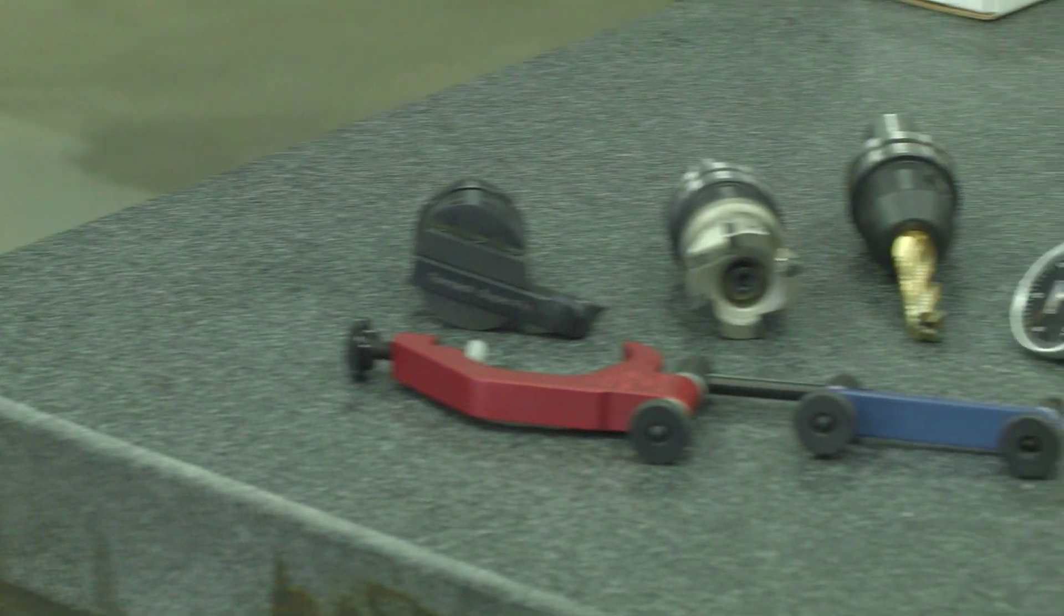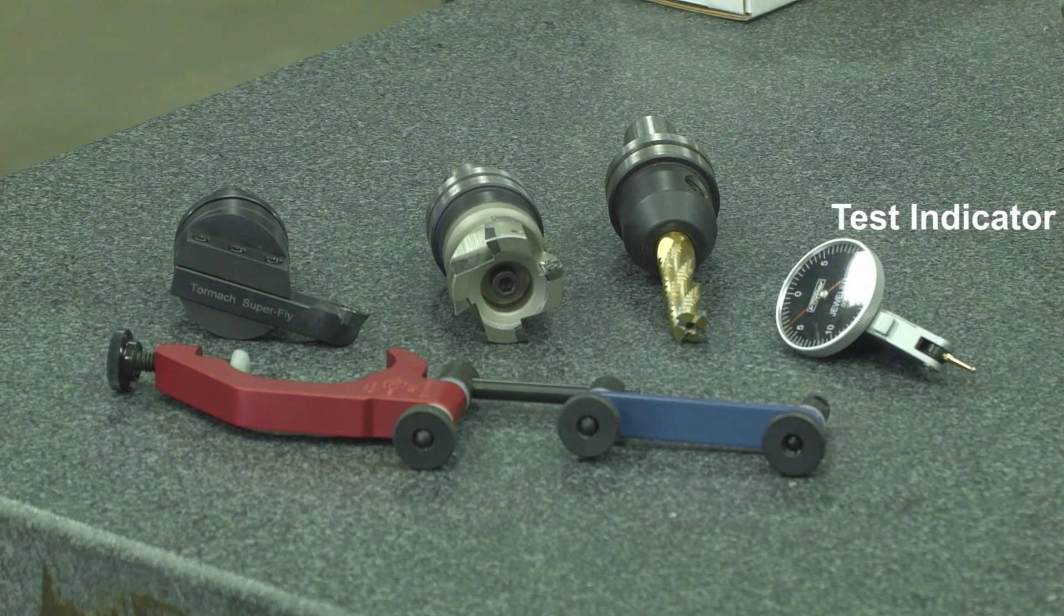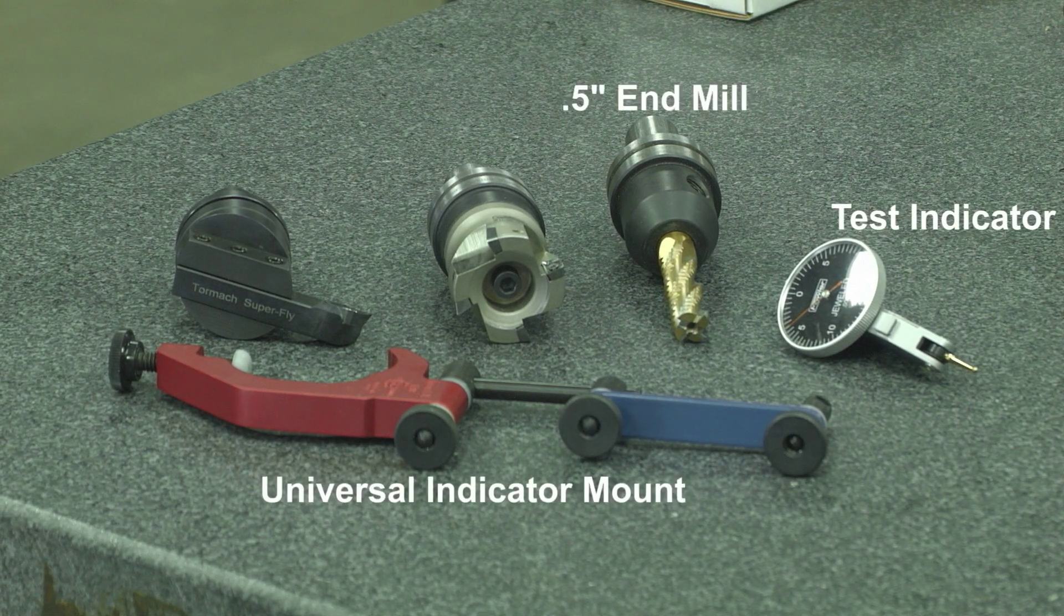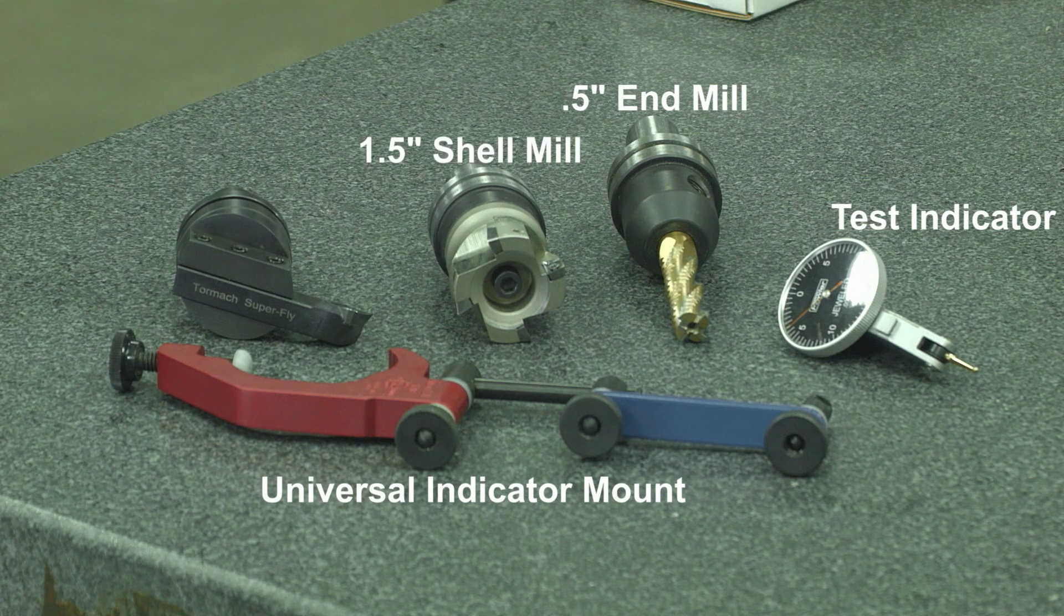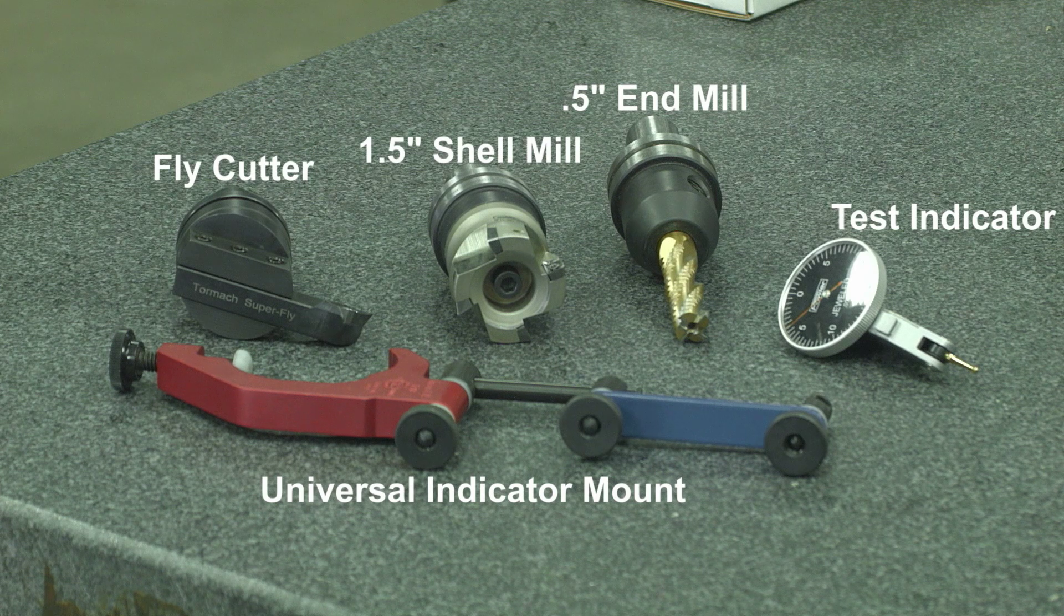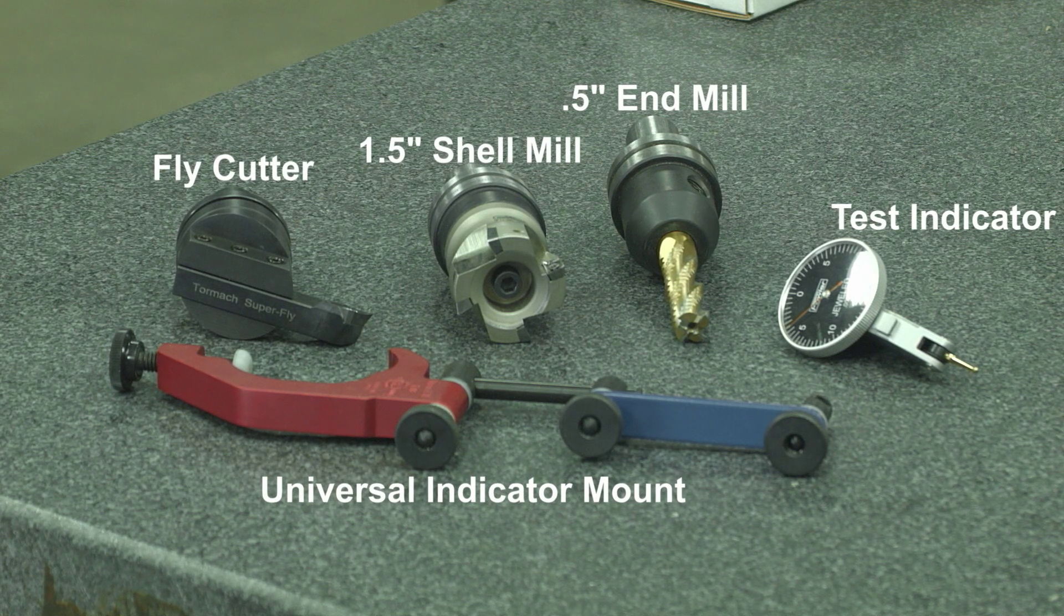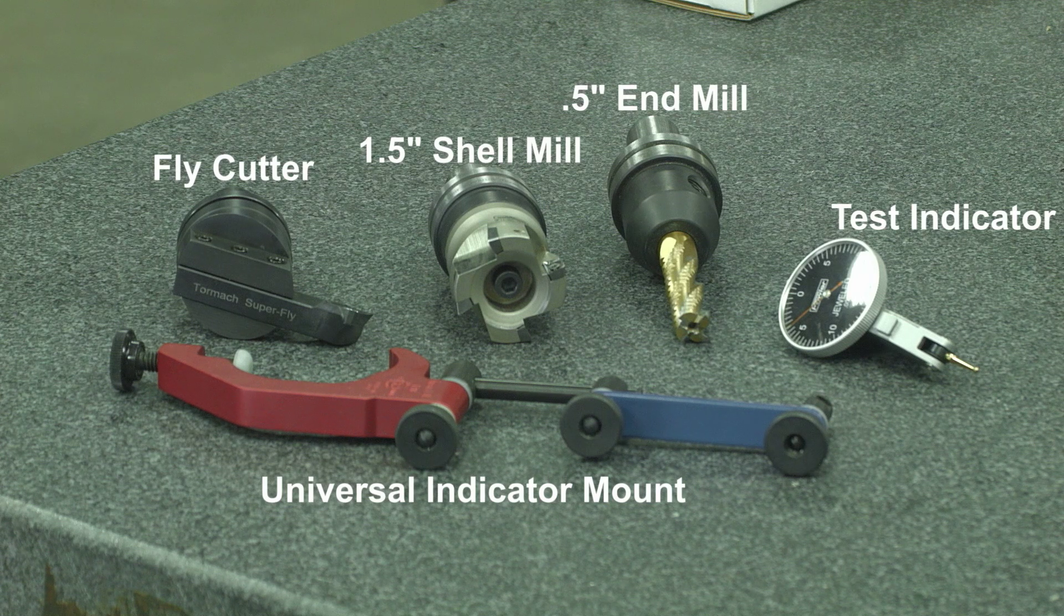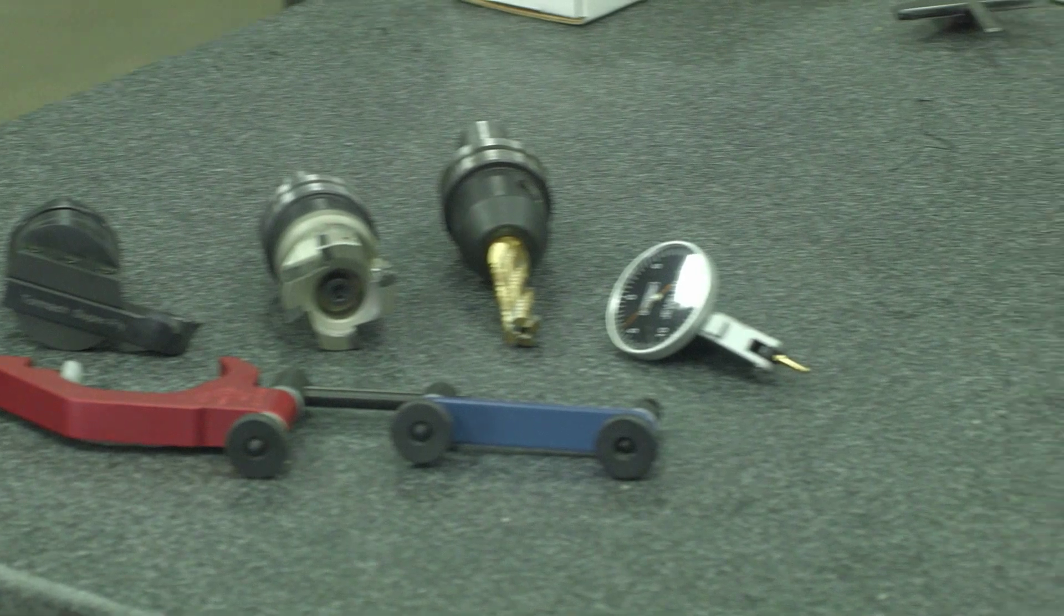You have a choice in the tools you use but the test indicator and universal mount are a must-have. The end mill can be used for doing the facing. The part would be positioned on its side so the end mill can make a full cut with the flutes. A shell mill is good for facing and roughing out material and will be the one I use. The part can be positioned as it is and I will get very good rigidity while cutting. Lastly is the fly cutter. It does a great job on finishing cuts but is slow to remove material.